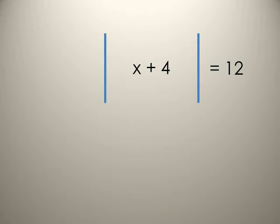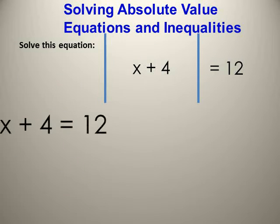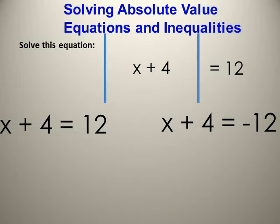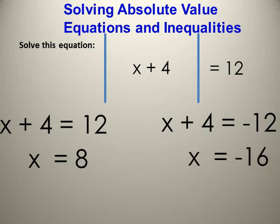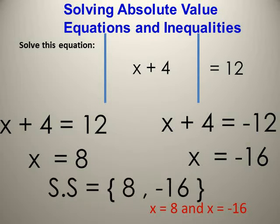Solve |x + 4| = 12. That means inside the absolute value we have 12 or negative 12. First equation: x + 4 = 12, so x = 8. Second: x + 4 = −12, so x = −16. Substitute to verify both answers. Finally, the solution set equals {8, −16}.